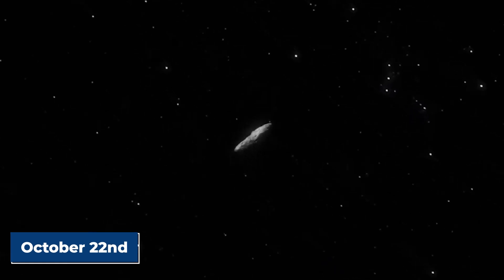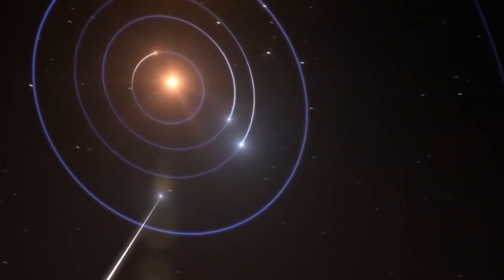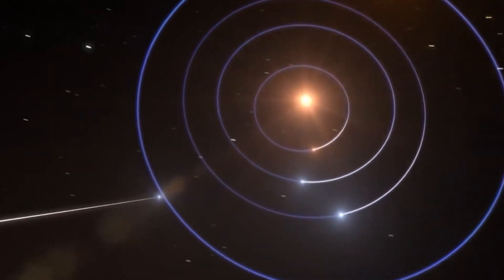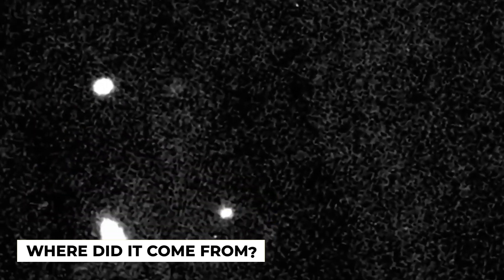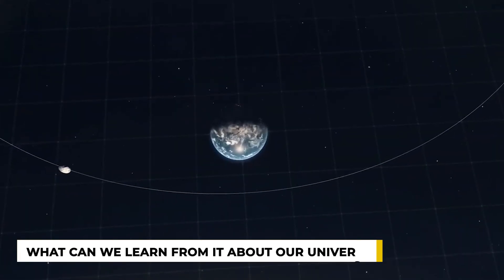By October 22nd, they had enough data to conclude that this object was not from our solar system. This news spread throughout the astronomy community like wildfire, and a race began to understand its true nature. What is this new visitor in our solar system? Where did it come from? And what can we learn from it about our universe?